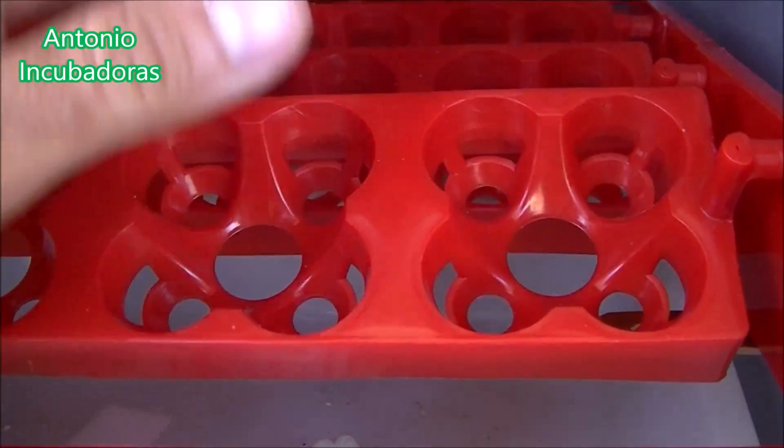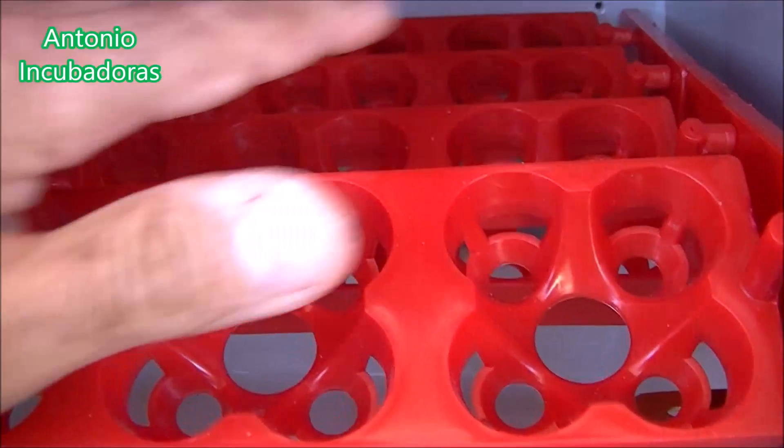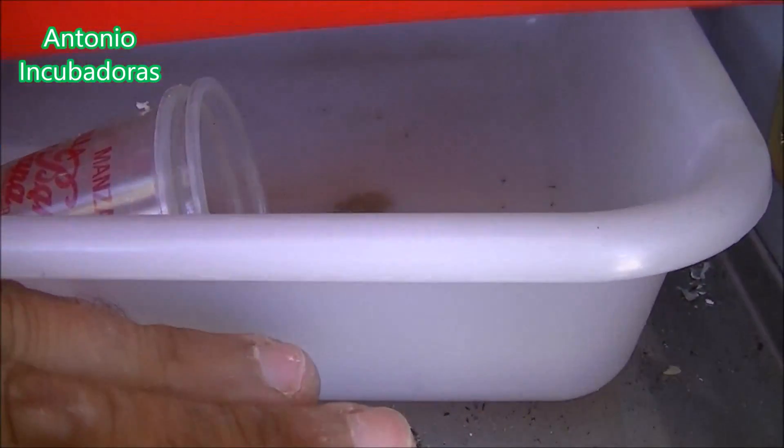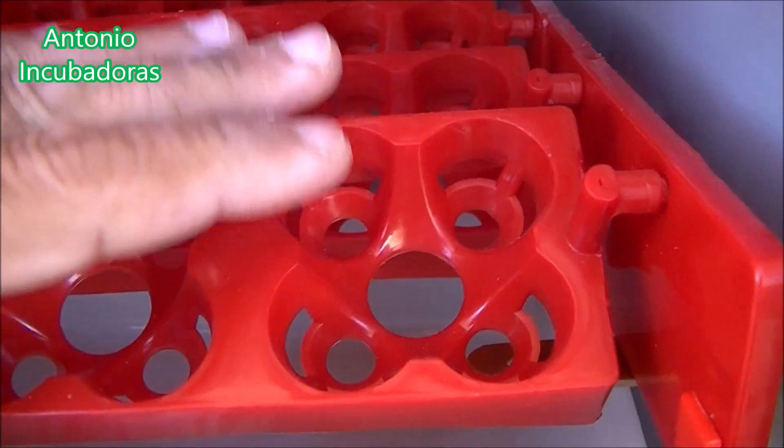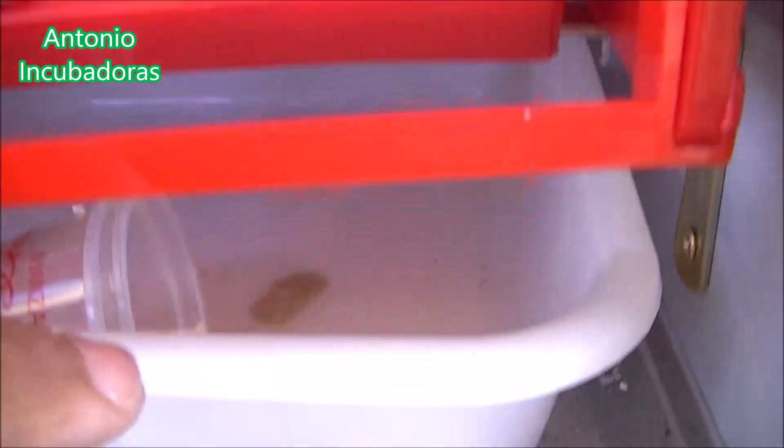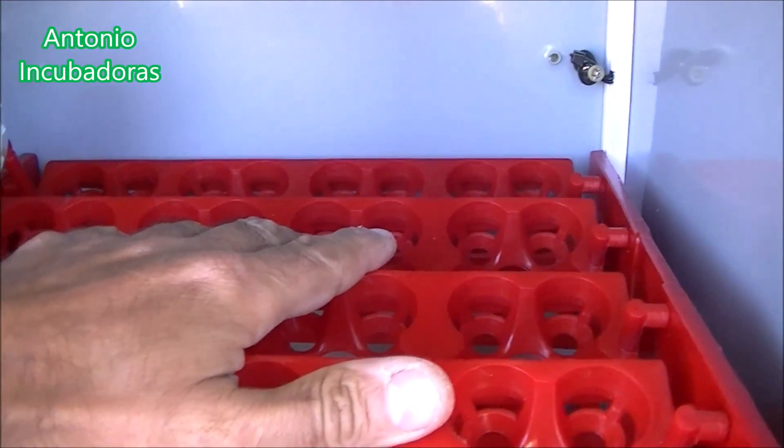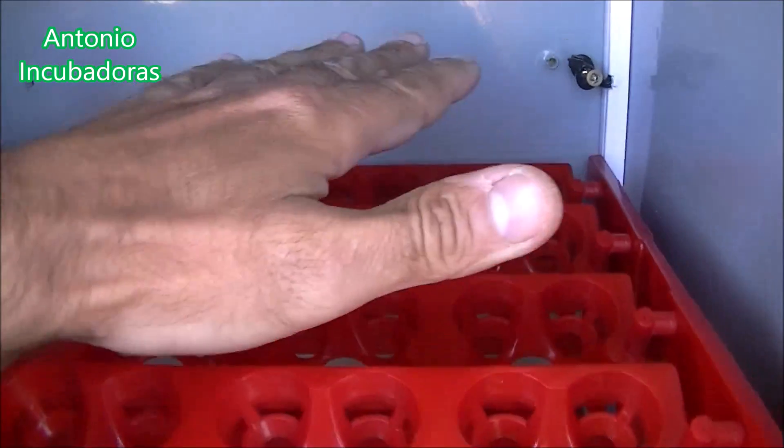Pero después tenemos la bandeja de abajo donde ya no pasa aire, la temperatura y la humedad variarán y aquí ya los resultados no serán tan buenos. Para colmo, si tenemos otra bandeja más, pues imaginaros, si la primera impide que pase el aire a la segunda, la primera y la segunda impedirán que pase el aire a la tercera y así sucesivamente tendremos una incubadora de muchas bandejas pero que realmente la buena, la buena va a ser la de arriba.